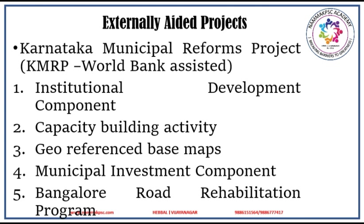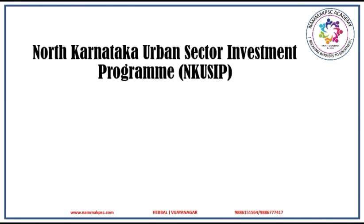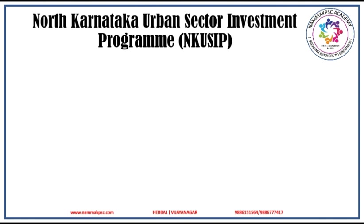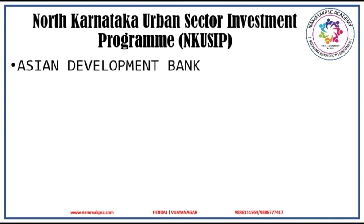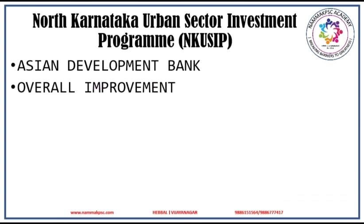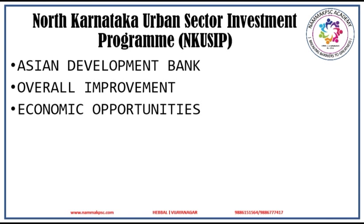The most important fact about this program is that it is World Bank Assisted. As we are discussing externally aided projects of Karnataka, let us also discuss about the Northern Karnataka Urban Sector Investment Programme. This is the third Asian Development Bank Assisted Urban Development Project of Karnataka. This project aims at providing basic amenities to Northern Karnataka region like 24/7 water supply, community development programmes, and state-of-the-art sewage treatment plants. The expected impact is improved urban infrastructure and services resulting in overall improvement of quality of life in ULBs, leading to increased economic opportunities and growth in Northern Karnataka region, which reduces imbalances between Northern Karnataka and the rest of the state.